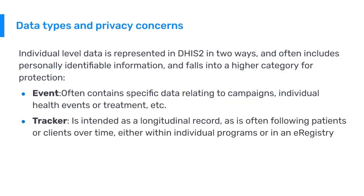When it comes to individual level data, the concerns are even greater. Individual level data is represented in DHIS2 in two ways and often includes personally identifiable information, falling into a higher category for protection. Event data often contains specific data relating to campaigns, individual health events or treatment. Tracker data, which is associated with an individual or a tracked entity, is intended as a longitudinal record, often following patients or clients over time, either within individual programs or in a more sophisticated registry.